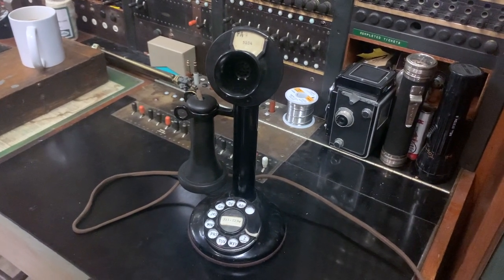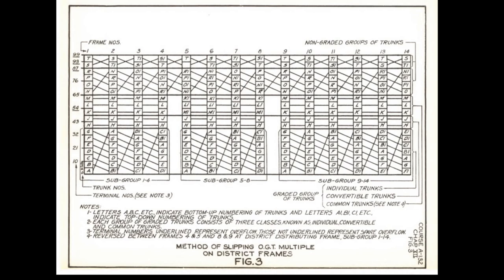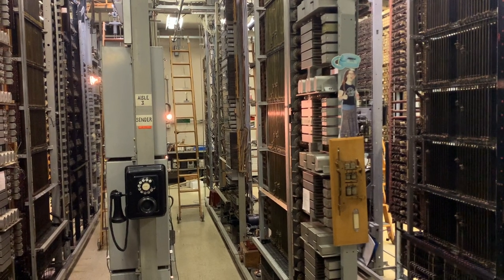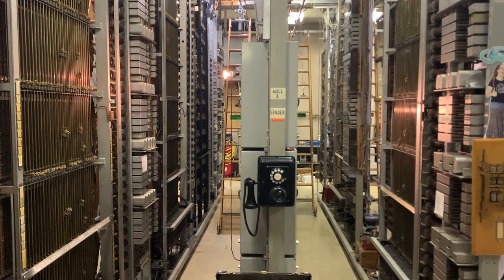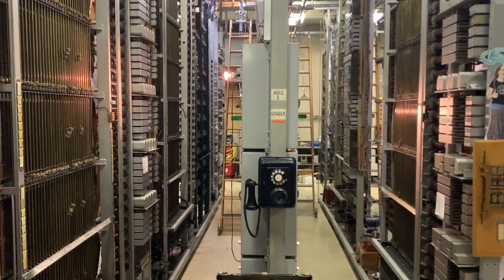In sequential hunting systems like the panel switch, traffic engineers were challenged to make sure that all-trunks-busy conditions happened as rarely as possible. The trunking layouts were engineered cleverly by dividing trunk groups into high-usage core groups and common overflow groups, arranged on the district frame so there was almost always enough capacity to handle the maximum expected call volume. This wasn't perfect, however, and a more robust method of handling an all-paths-busy condition was needed.